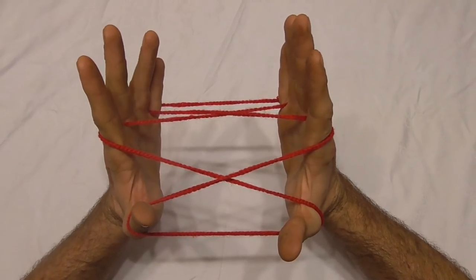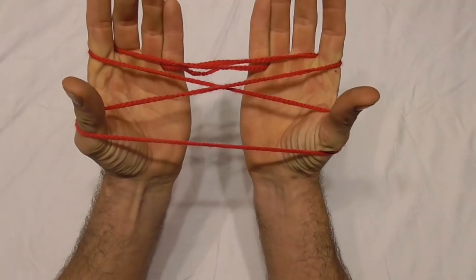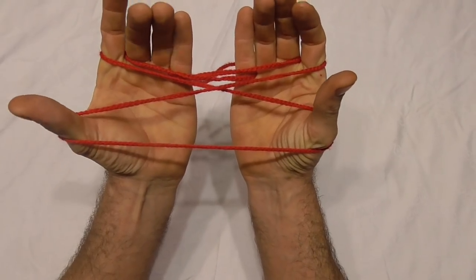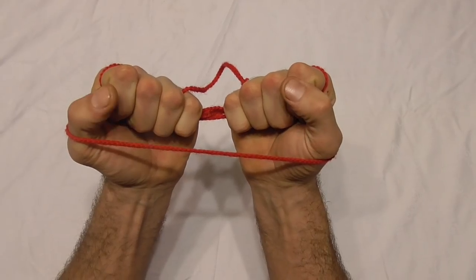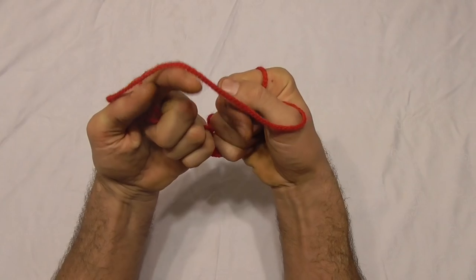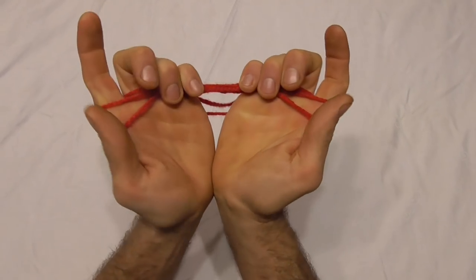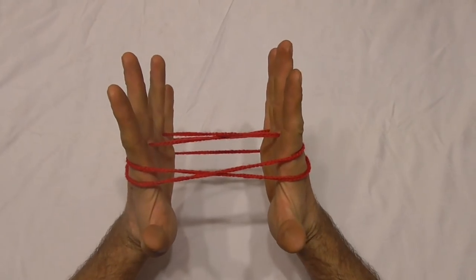Then what we want to do is rotate our palms towards us and grab all of the strings except for the near thumb string in our fists, and then transfer this string to the back of our hands. Just flip it all the way over. Then you can open up your hands and make them face each other again.